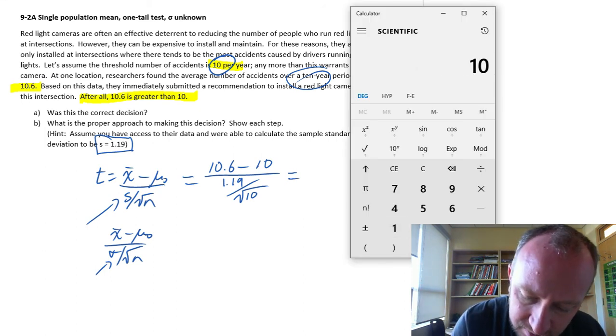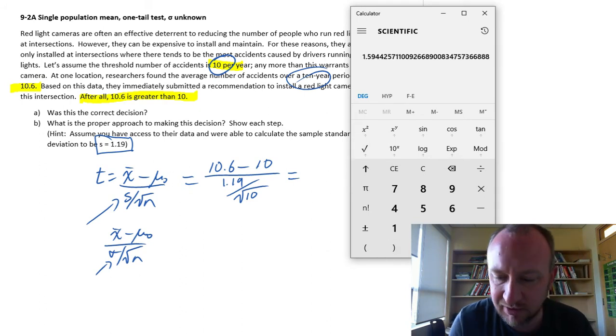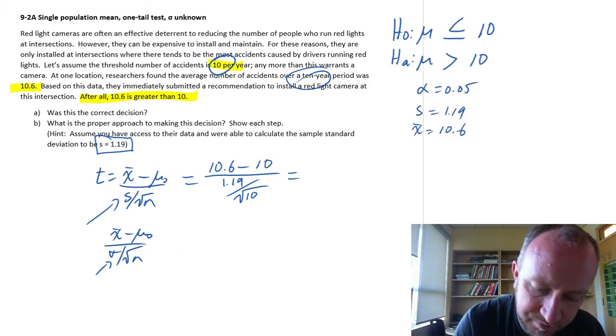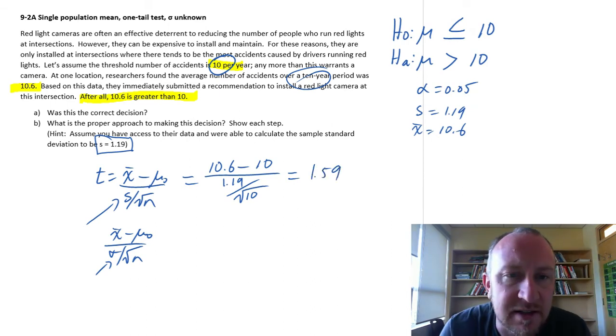So 10.6 minus 10 divided by 1.19 over square root of 10 equals, so I get 1.59. Okay, that's it.